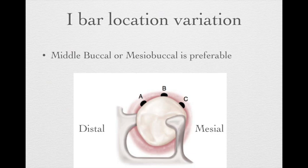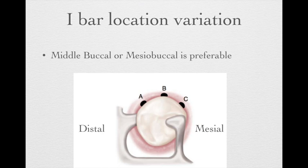The RPI system can provide very good retention following the principle of encirclement. If there is no undercut in the middle buccal, you may move it to the mesial buccal. However, we don't like the I-bar to be in the distal buccal, because it would be very close to the distal proximal plate, which would affect the principle of encirclement and also shorten the length of the I-bar, decreasing clasp flexibility.